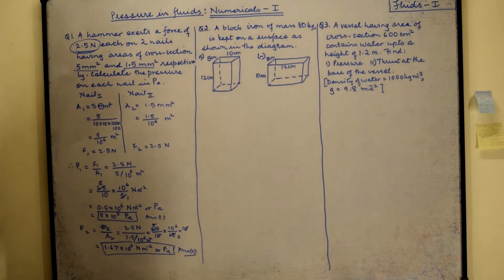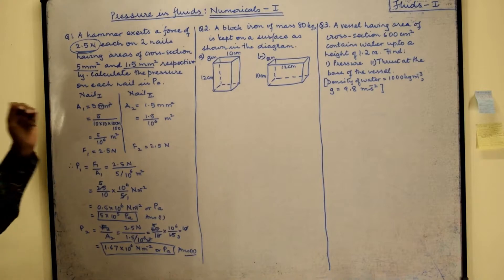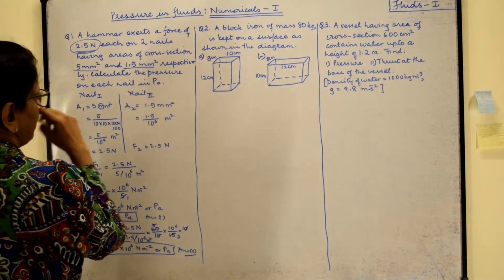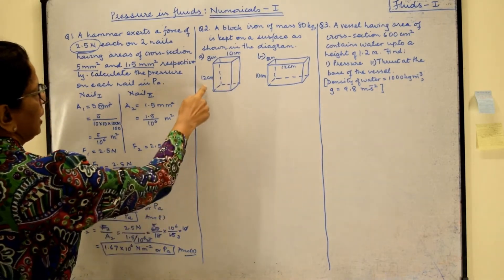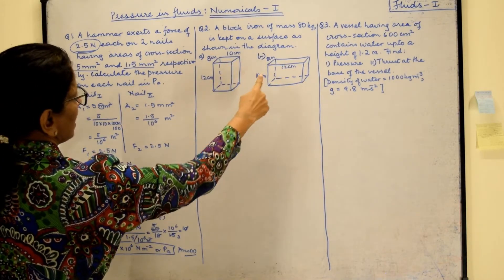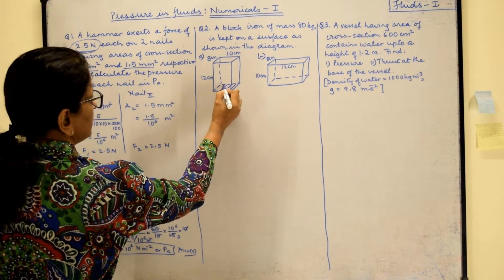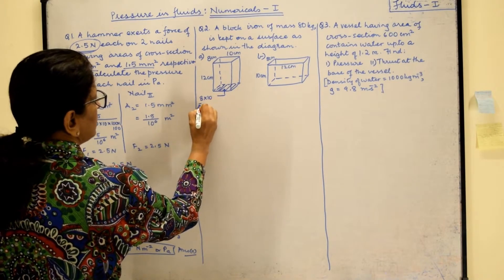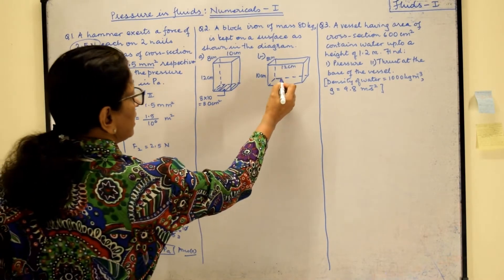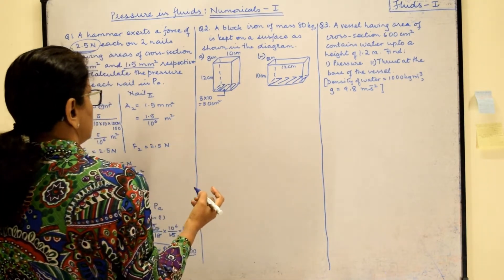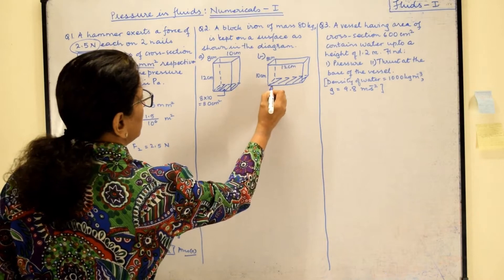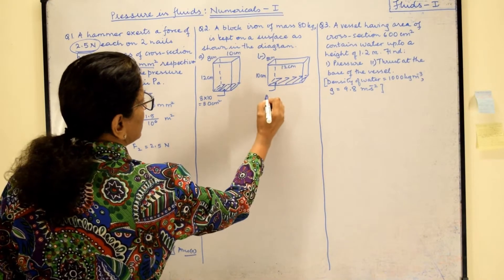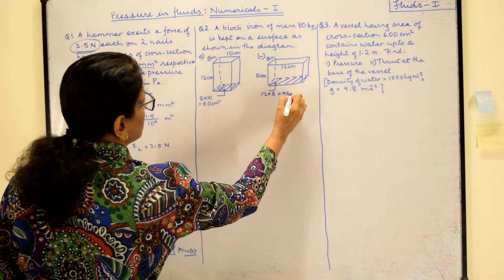Now let us come to another very popular question. We have a block of iron with dimensions 12 × 8 × 10 cm. In case A, the area in contact with the surface is 8 × 10 = 80 cm². In case B, a different surface is in contact, so the area is 12 × 8 = 96 cm².